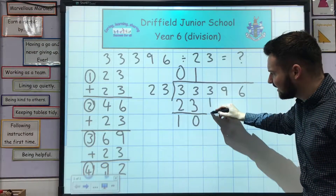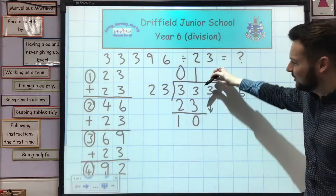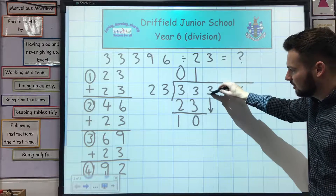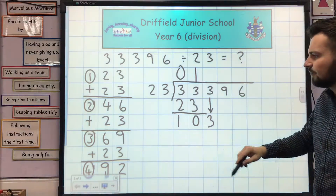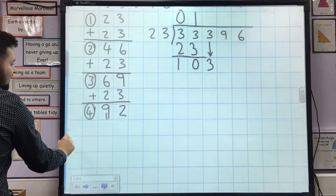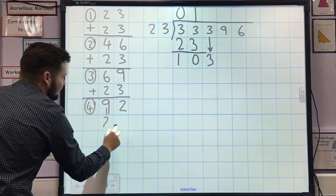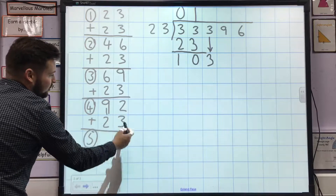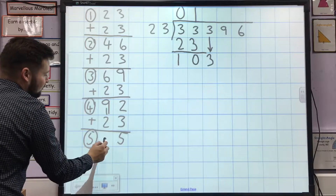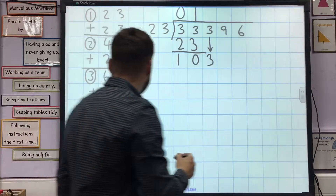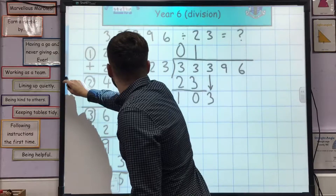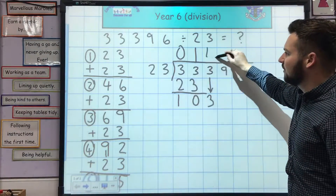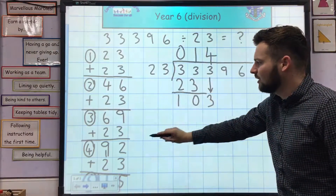So I'm going to bring down the next digit along, which is this 3. You know it's the next digit because it's where your line ended — the number in the next column along. I'm going to bring that 3 down and make 103 there. I'm only up to 92 in my column addition, so I'm going to add another 23 to get the next number to check whether it goes 4 or 5 times. 2 add 3 is 5, 9 add 2 is 11, so that gives 115. 115 is bigger than 103, so it must only go 4 times. 23 times 4 is 92.